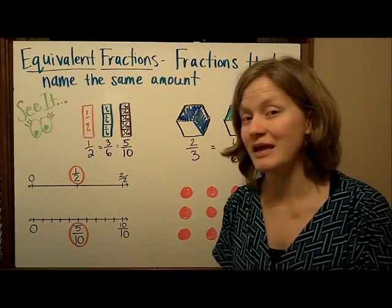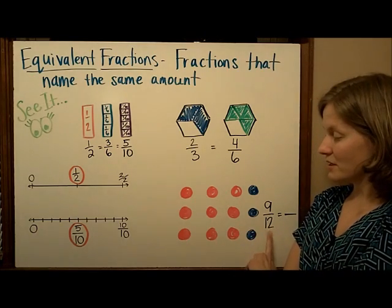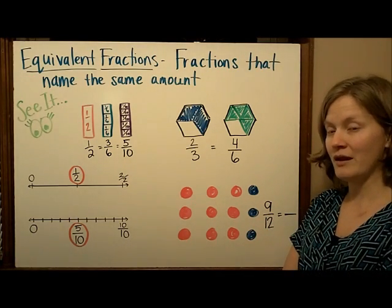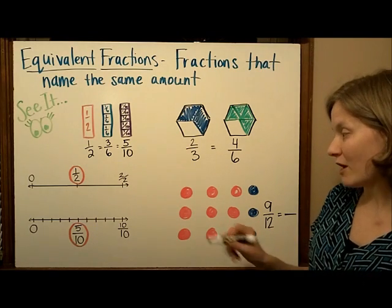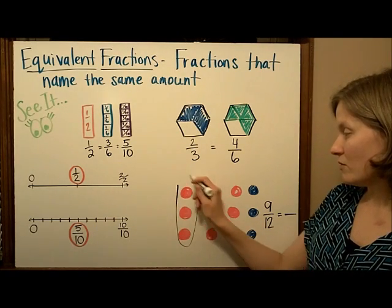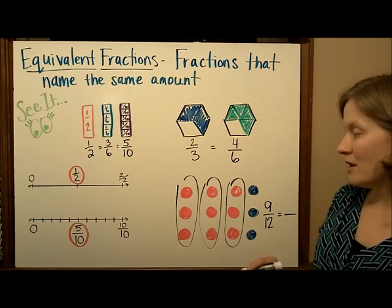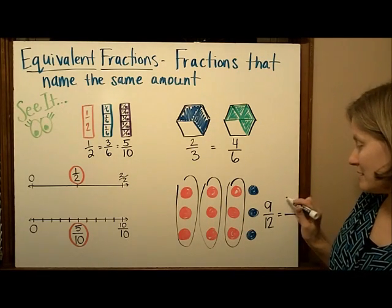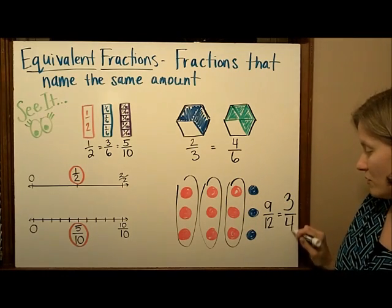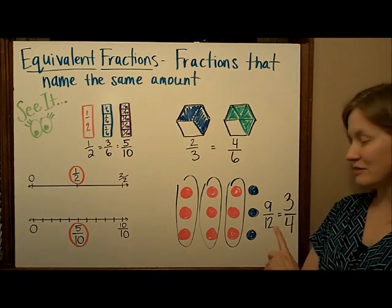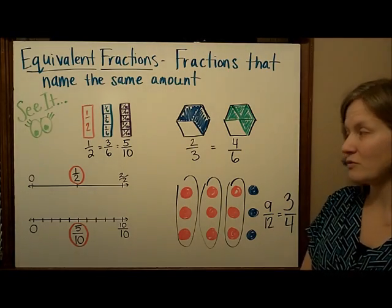And finally, we can see equivalent fractions with a set model. Nine-twelfths of these circles are red, but we can also choose to look at it in rows and find an equivalent fraction. There's a row of red, another row of red, three rows of red. When I look at it this way, I can see that three out of four rows total are red, which tells us that nine-twelfths is equivalent to three-fourths.